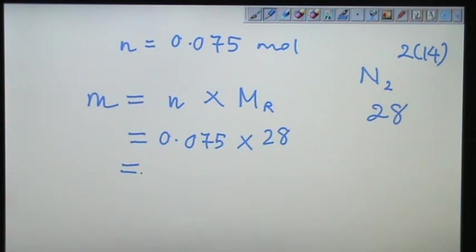So now you can press the calculator. And I'm sure that you will get 2.1 gram. So this will be 2.1 gram of nitrogen gas. Gas can be heavy as well. Alright.